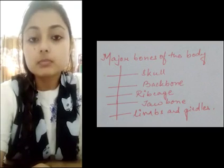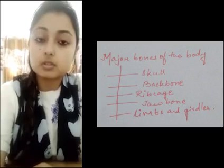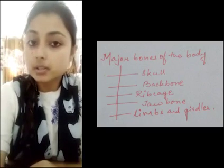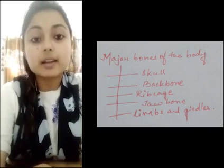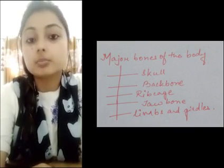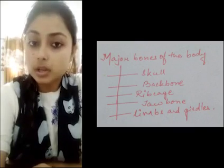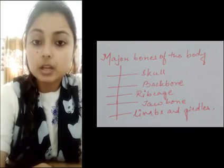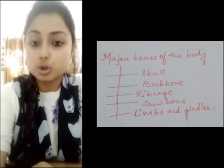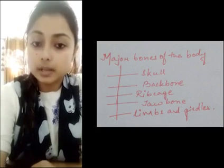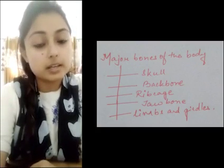Now we will learn the major bones of the human body. Bones are made up of calcium and phosphorus. These minerals add strength and hardness to the bones. There are different types of bones in our skeletal system. The major bones are: the skull, the backbone, the rib cage, the jaw bone, and the bones of the limbs and girdles.